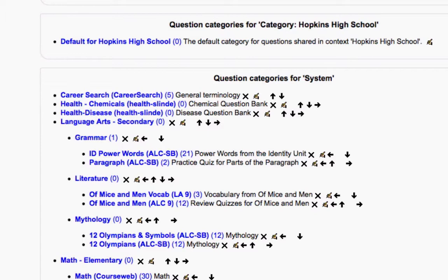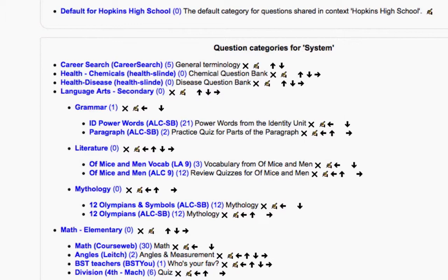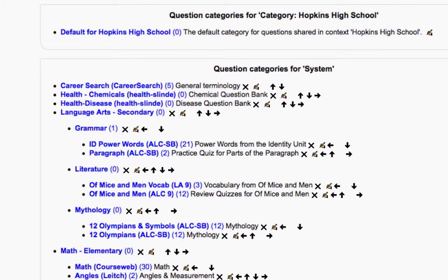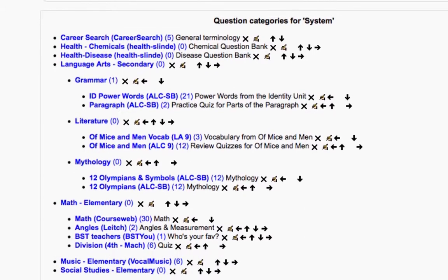If they are at Alice Smith, they want to share their questions with somebody at Meadowbrook, your questions have to be stored at the system level because if it's in a completely different school, then you can't share unless you're higher up in the hierarchy. I hope that makes sense.